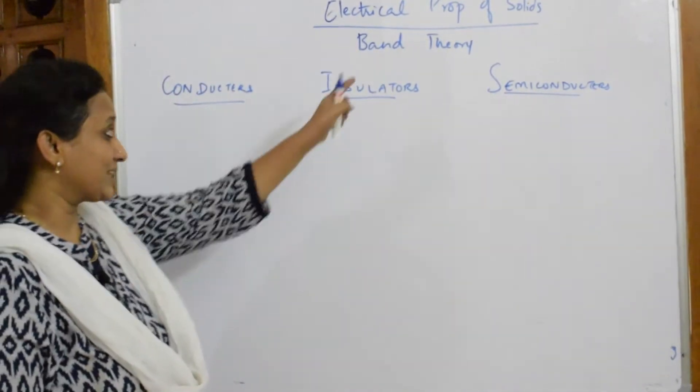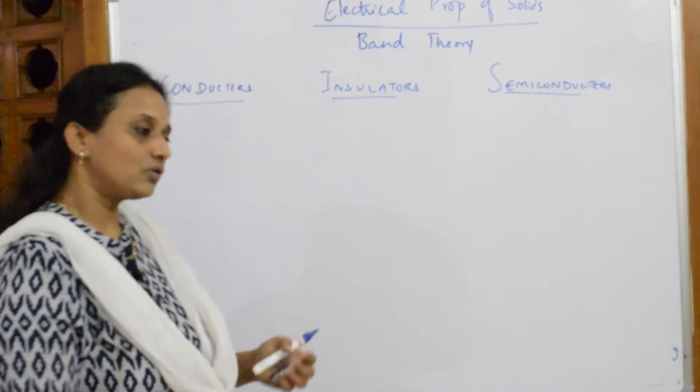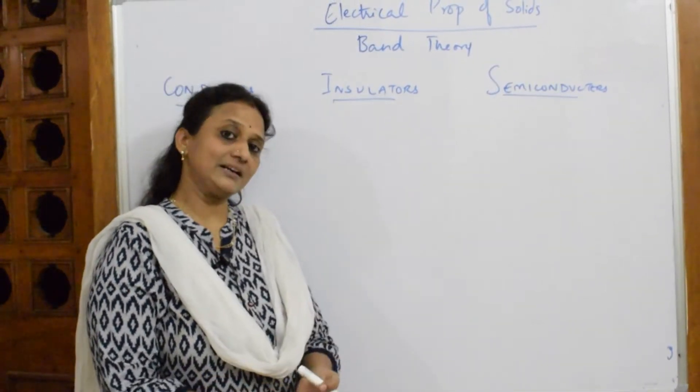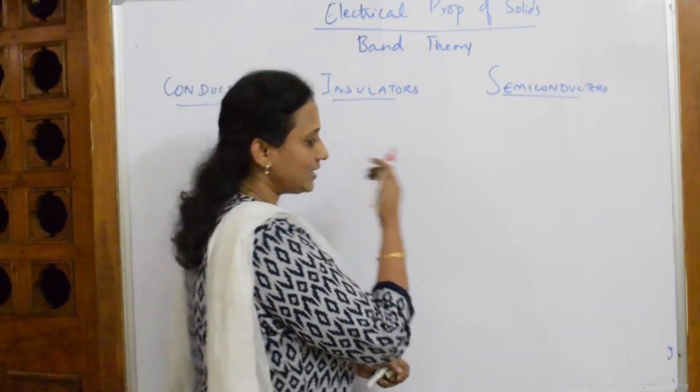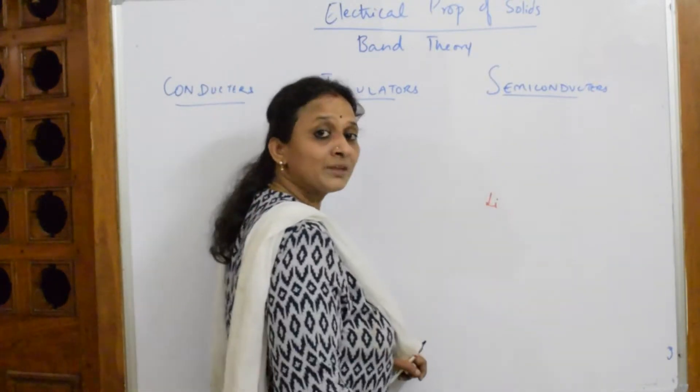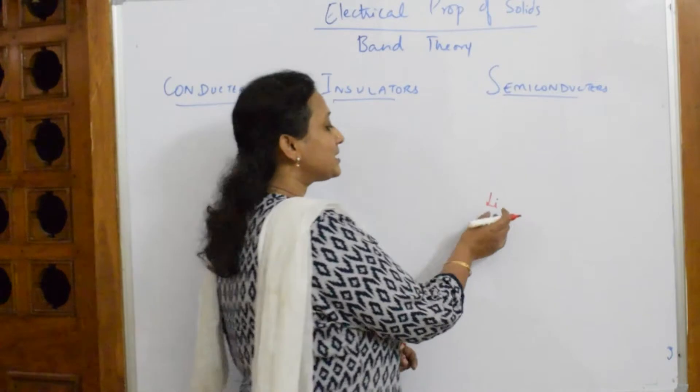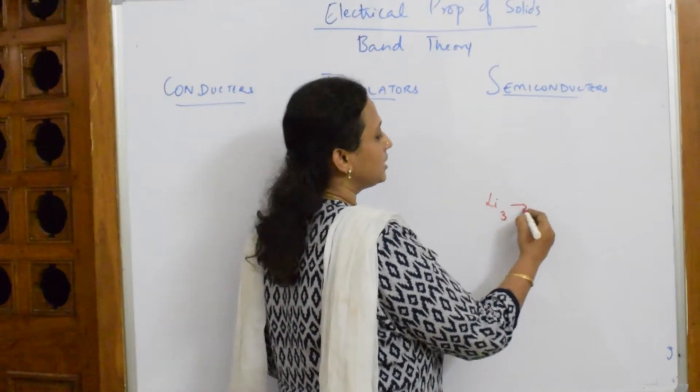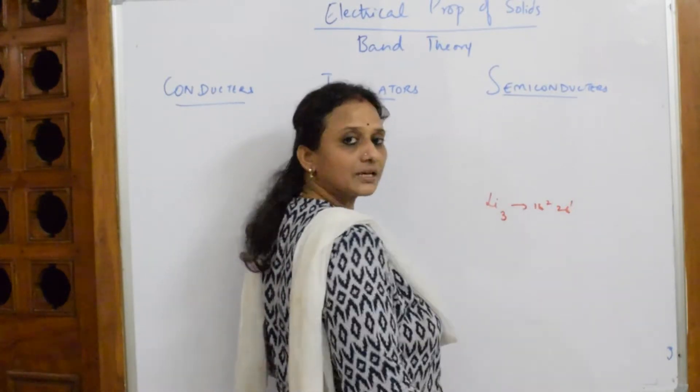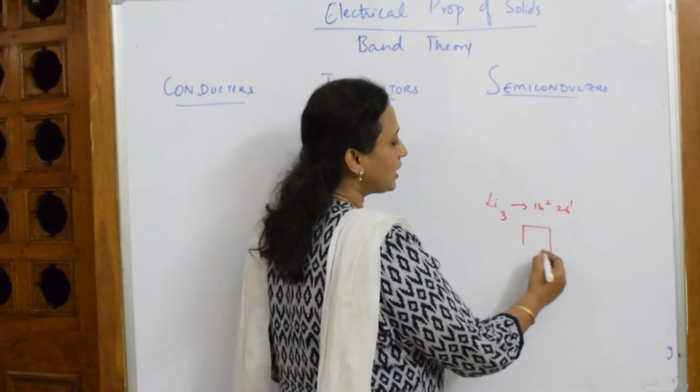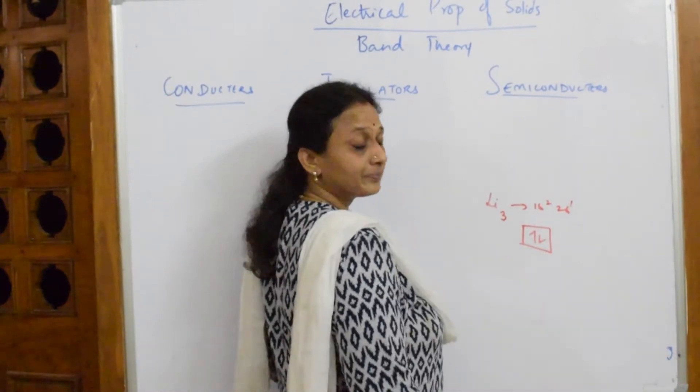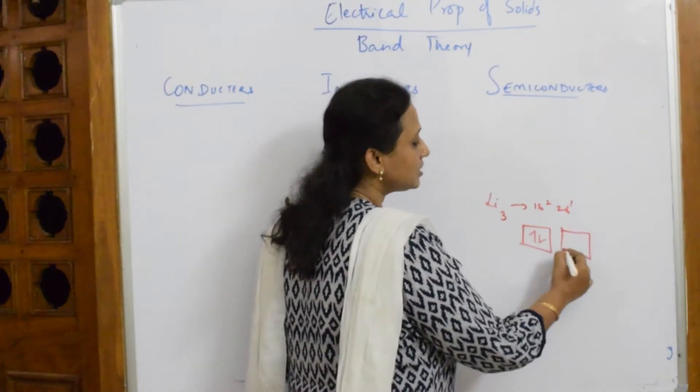Now, what actually is this band? I have to know what actually is this band in terms of an element. Suppose, if I speak on basic example. I am taking one lithium element. This particular lithium element, atomic number 3, 1s2, 2s1. Now, this 1s2, you have both electrons. In your 2s1, there is only one electron.